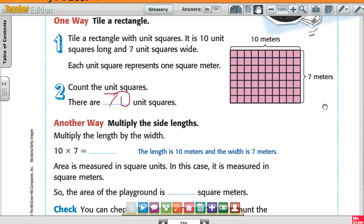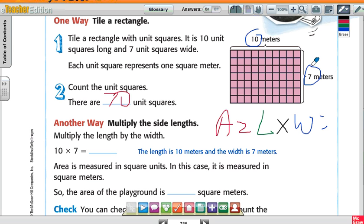Another way to do that, like somebody just told me, is area equals length times width. So the length would be 10, the width would be 7. So length times width would be 10 times 7, which is 70. So the area of the playground is how many square meters? 70.